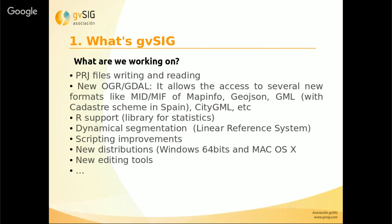With the OGR and GDAL library we will be able to access new formats. There will be R support, which is a very important library for statistics. We will also have the linear reference system and dynamical segmentation, several improvements in the scripting module, new distributions for Windows 64 bits and Mac, and new editing tools such as the Parallel tool and others.